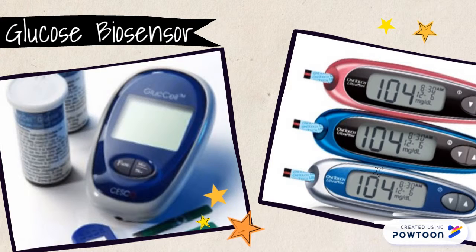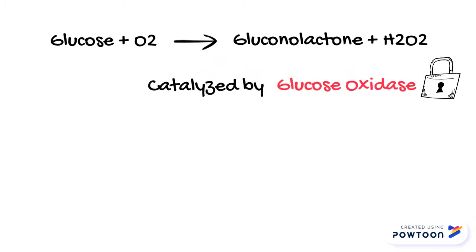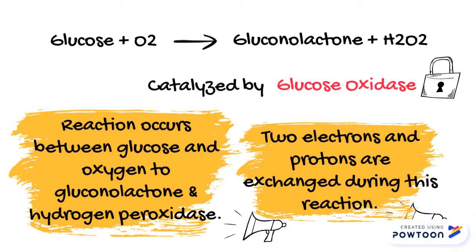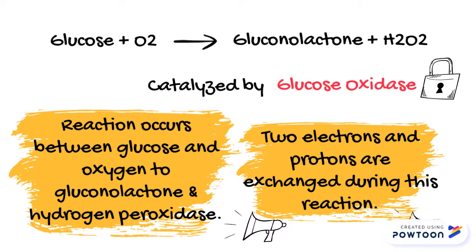This is where glucose biosensor comes in handy. It is a type of device used to monitor blood glycemic level in the body. Glucose biosensor, also known as glucometer, is very helpful for people with diabetes mellitus as they can use it to monitor their blood glucose level. It involves a reaction between glucose and oxygen to gluconolactone and hydrogen peroxide, catalyzed by glucose oxidase enzyme, known as GOX. During this reaction, two electrons and protons are exchanged.